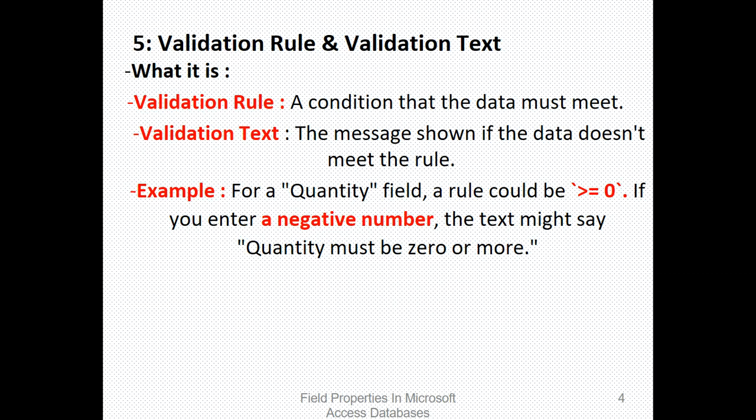Then we have validation rule and validation text. Validation rule is a condition that the data must meet, or a rule that must be obeyed. The error message that comes when you violate the validation rule is called the validation text. It's the message shown if the data doesn't meet the rule.